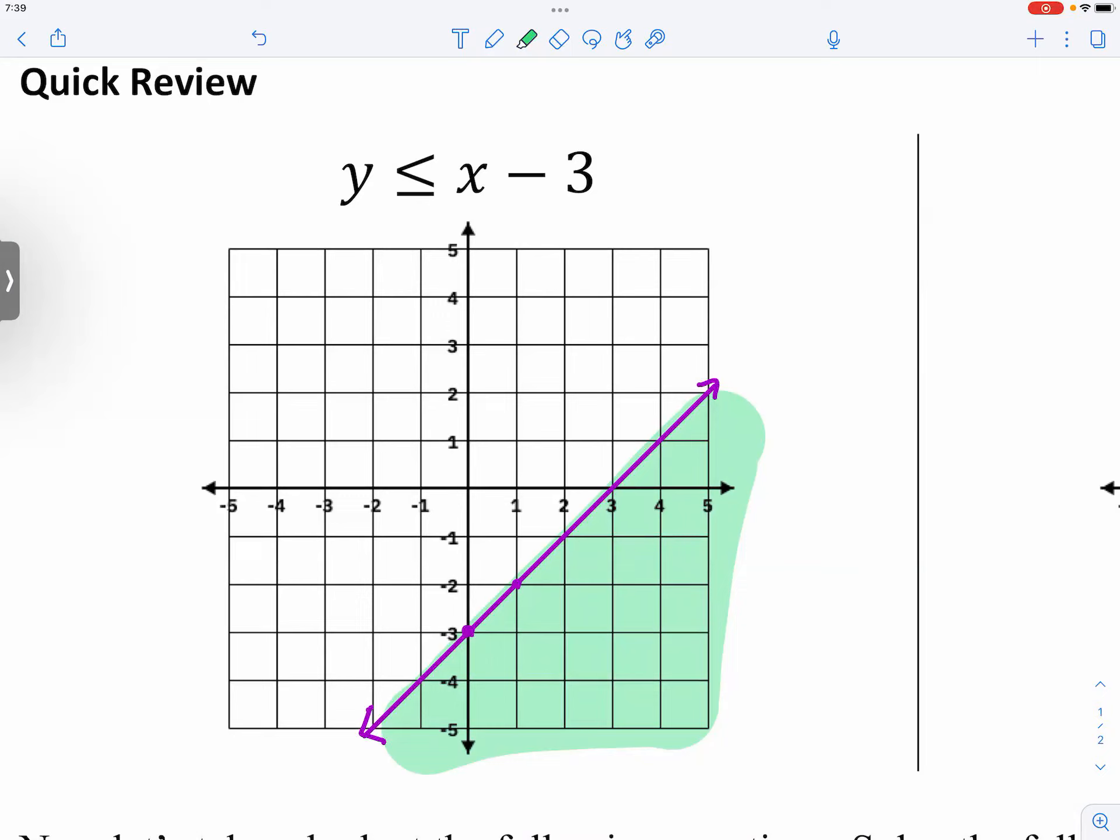Meaning that any x, y values, any point, any point right here in this region, like for example, a point right here. You go ahead and put the x and y value for this point into this inequality. And that will make it true.